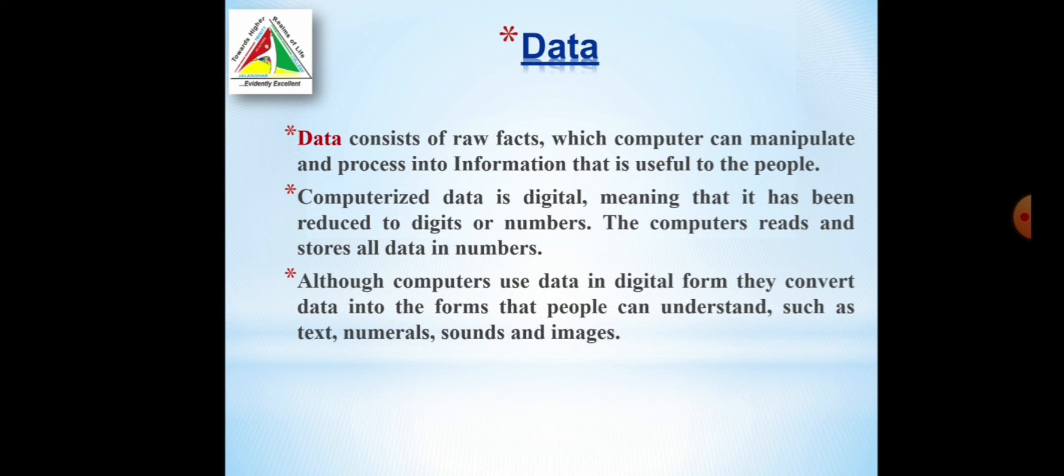Now, we will go for data. I already explained to you what is data actually. Data consists of raw facts which computers can manipulate and process into information that is useful to people. Computerized data is digital, meaning that it has been reduced into digits or numbers. The computer reads and stores all data in numbers. If we collect data, then we send this data to the computers. Data can be any facts, figures, numbers, pictures. But the fact is that computer is not able to understand all data. Computer changes all data in the form of numbers or digits.